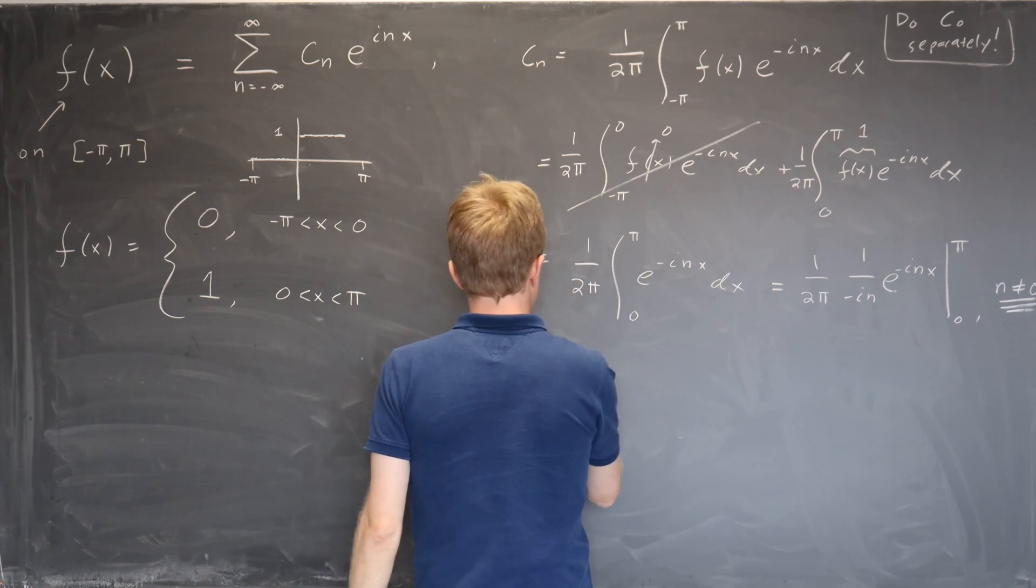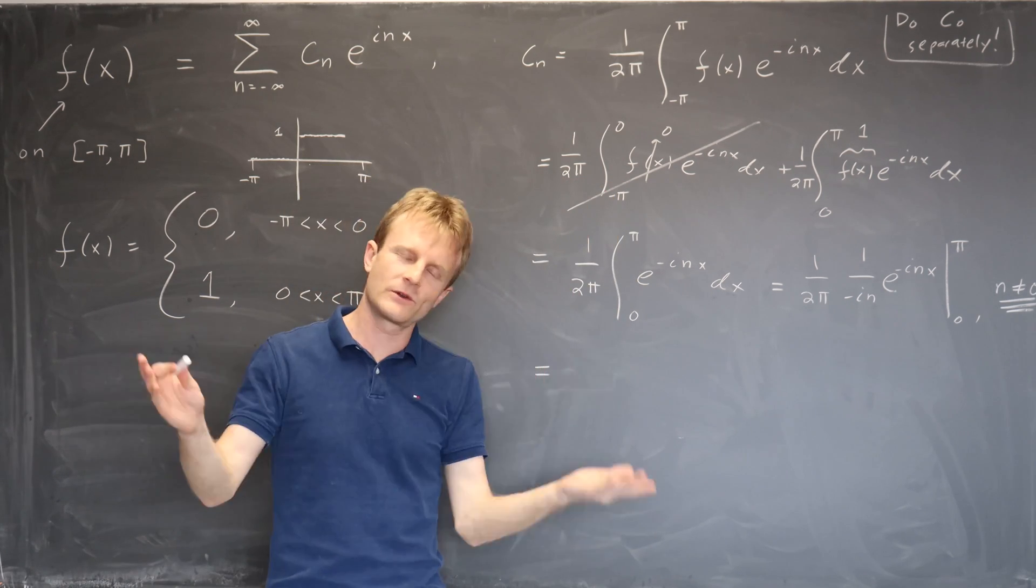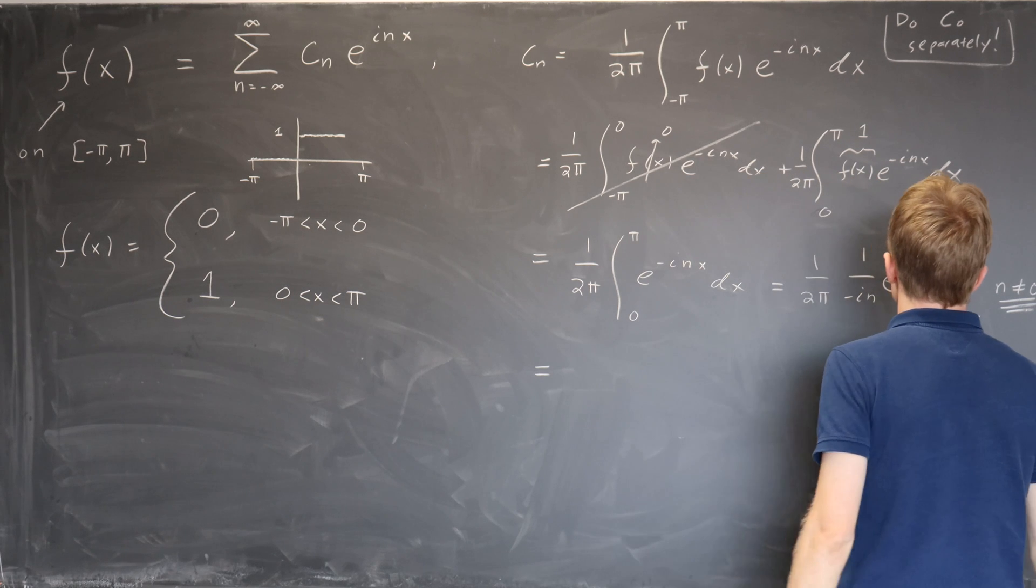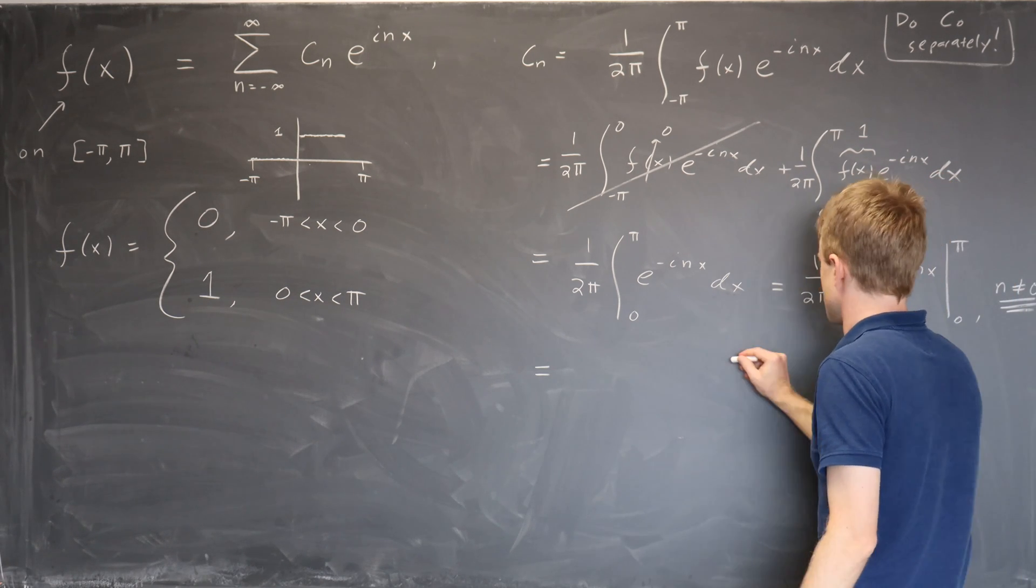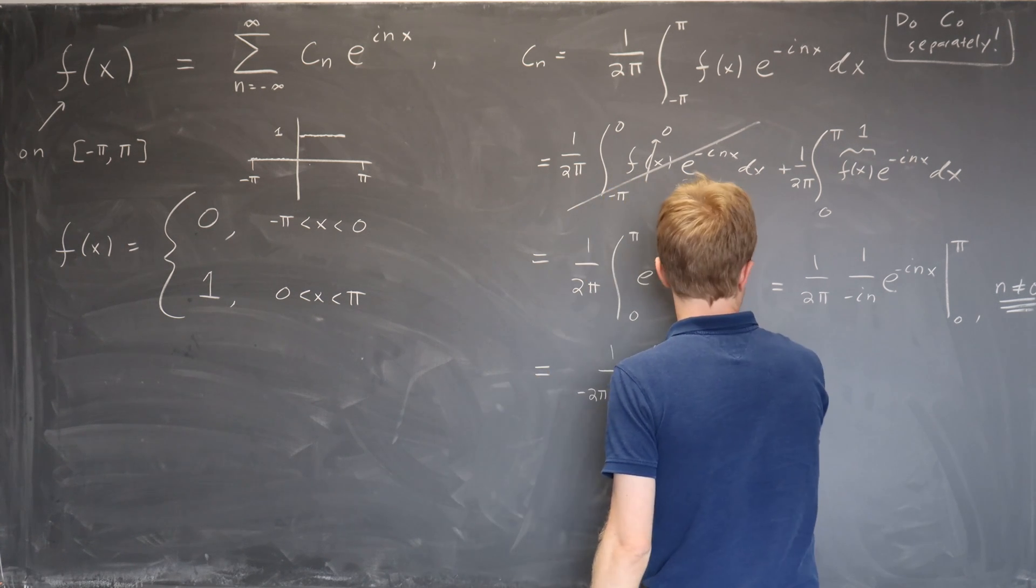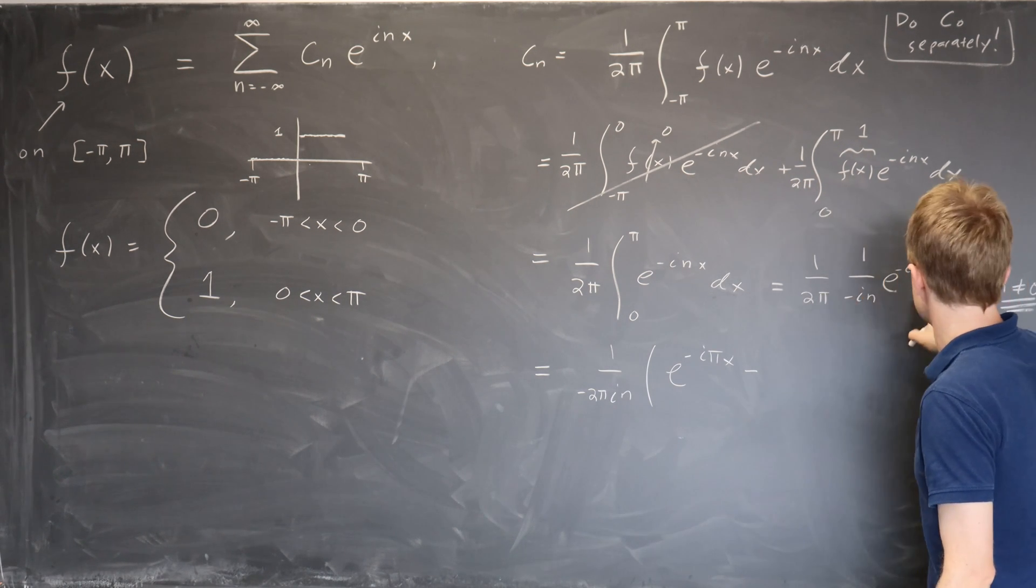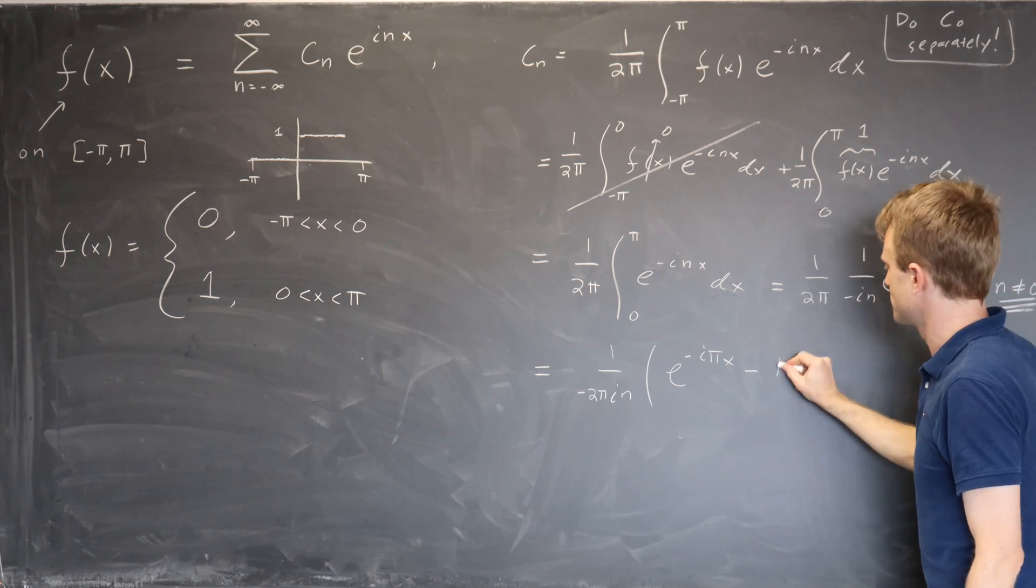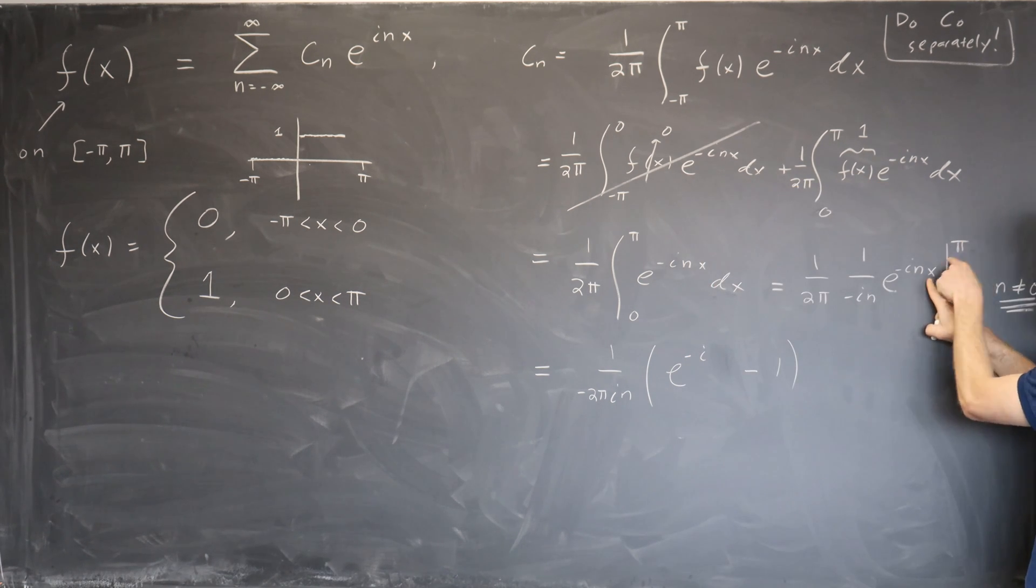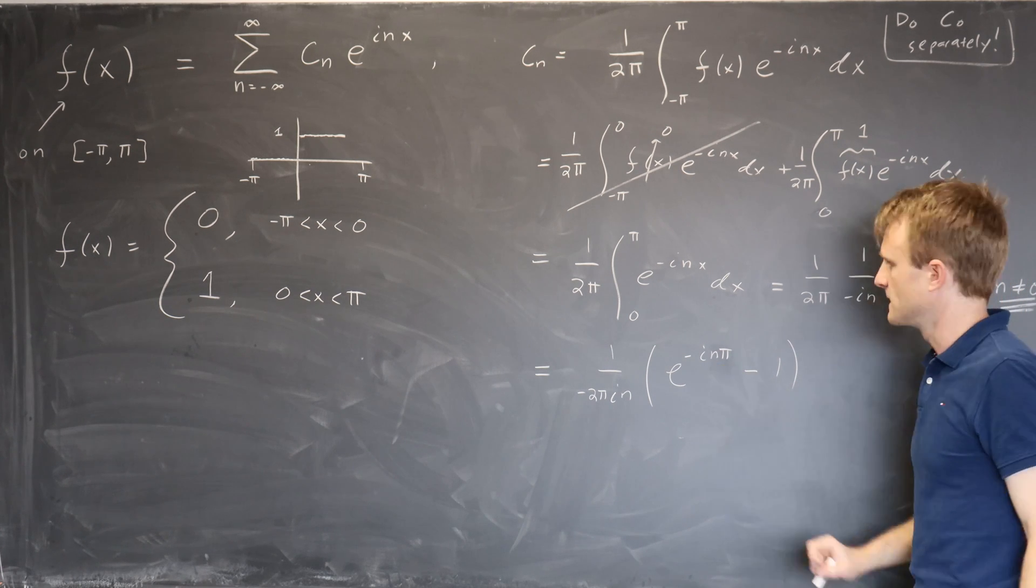Now your temptation might be to use Euler's formula and delve into sines and cosines because you're more familiar with it. Don't do that. That's harder. You have to remember all sorts of stuff or draw little pictures. Just go back to the complex plane. It's really quite simple to figure out what e to the inx is. So let's write it as e to the minus in pi minus e to the i times 0 which is 1. The first term here we set x equals pi and leave n in there. Now we go to the complex plane to figure out what this thing is, e to the minus in pi.